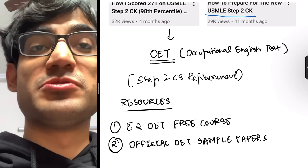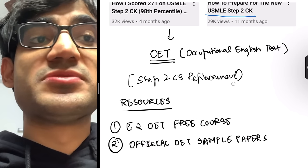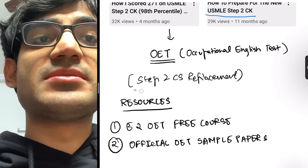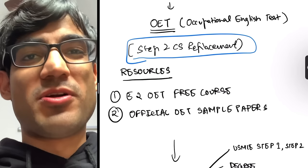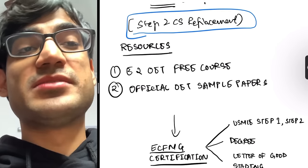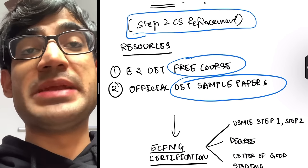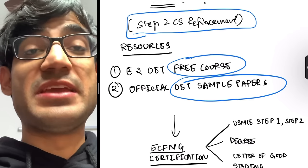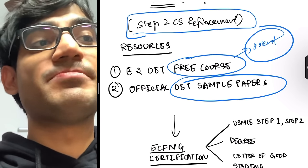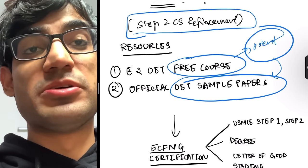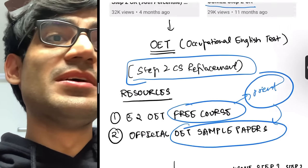Once you're done with Step 2 CK, it's time to write the OET — Occupational English Test. This is a replacement for Step 2 CS, which was discontinued due to COVID. Preparation takes only about four to five days. The recommended resources are the E2 OET free course on YouTube and the official OET sample papers covering reading, writing, listening, and speaking.